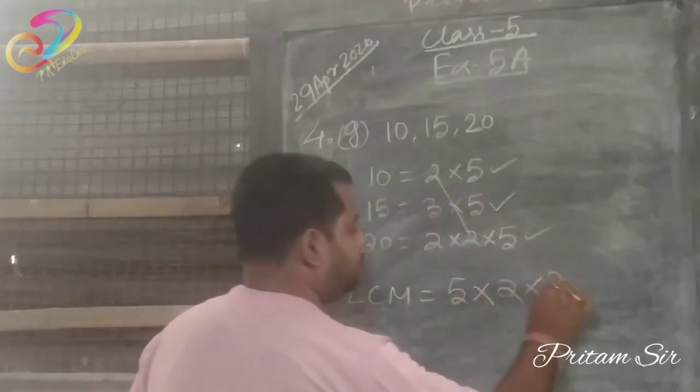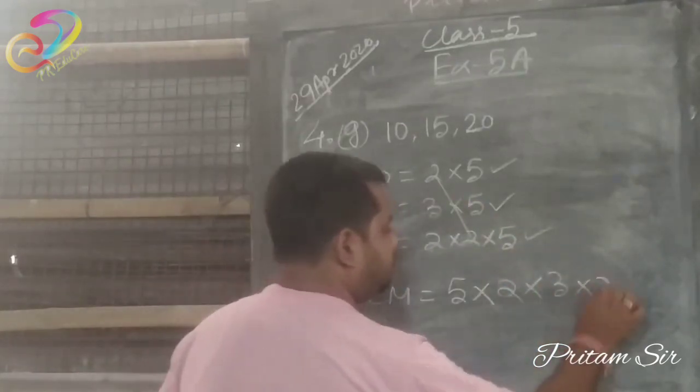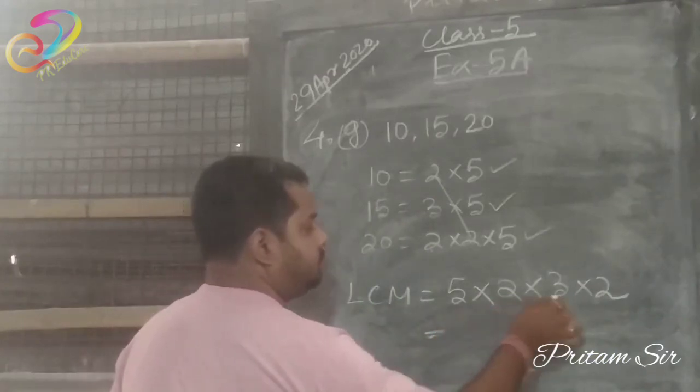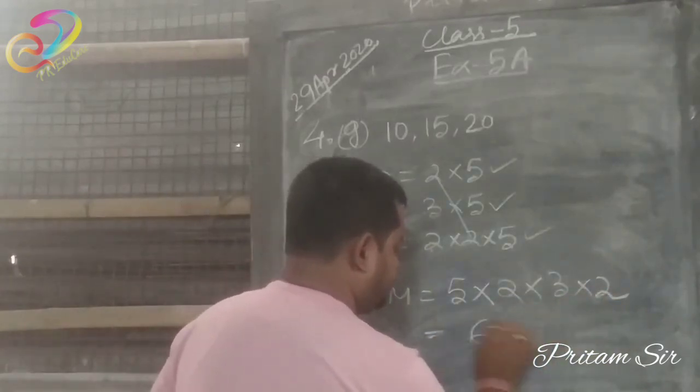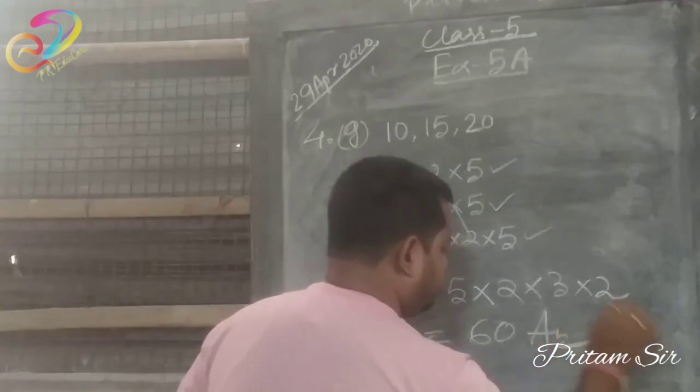So 5×2 is 10, 10×3 is 30, 30×2 is 60. 60 is our answer. Clear now?